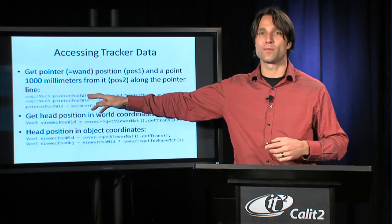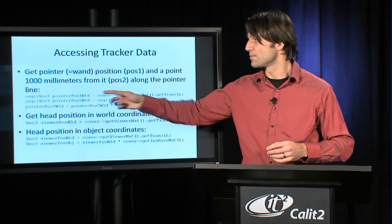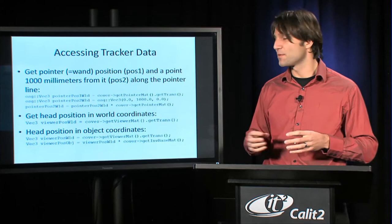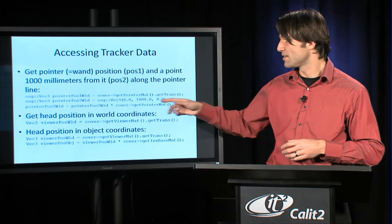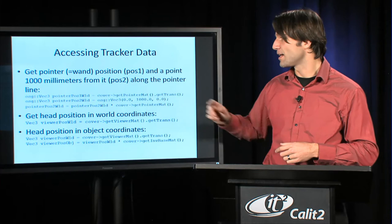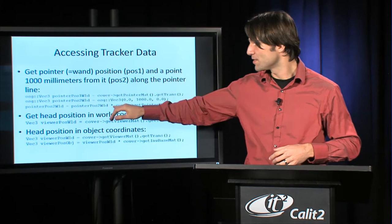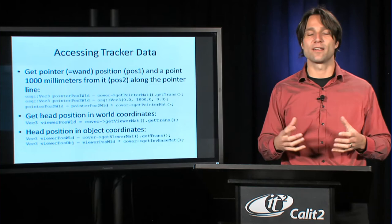What we do here is we create a vector, an OpenSceneGraph vector variable for the pointer position. Then we also create a position for a place that's 1000 millimeters—and note that in Covice all coordinates are in millimeters—1000 millimeters from this hand position, which is a meter, about 3 feet. That makes it so we can define a line that allows us to use this line and intersect it with something in the scene, as long as we're not more than a meter from it.